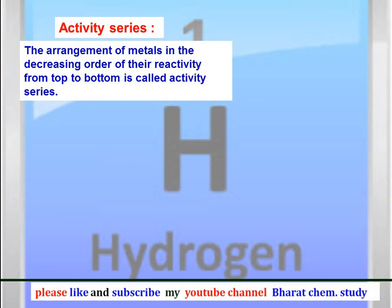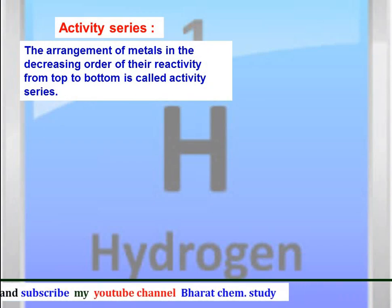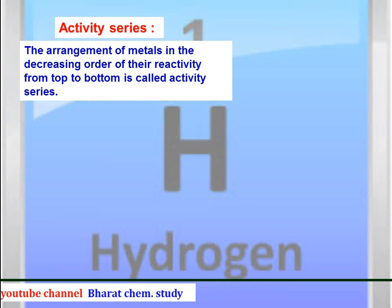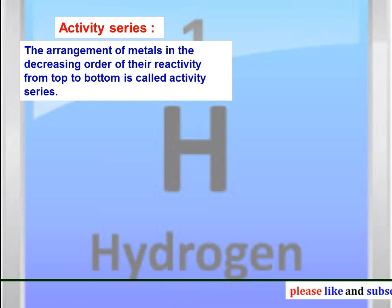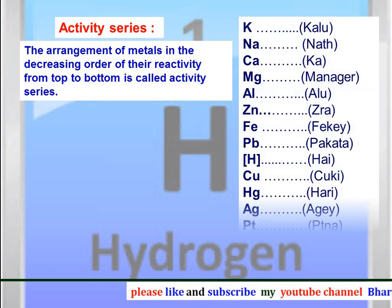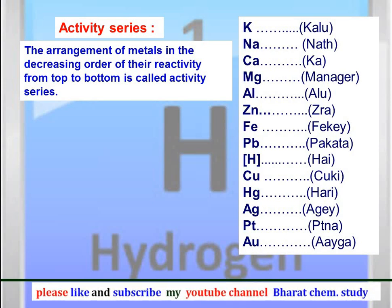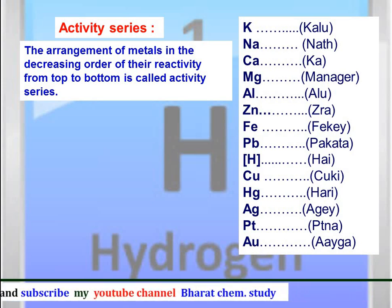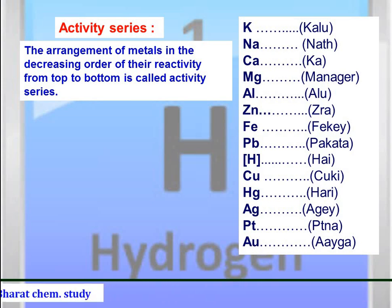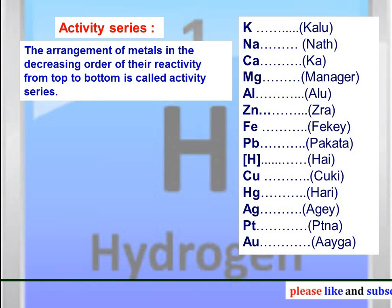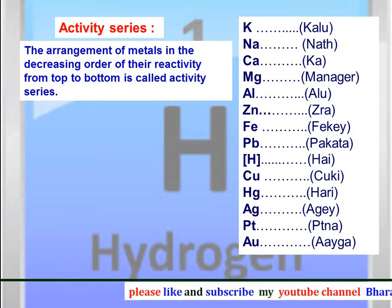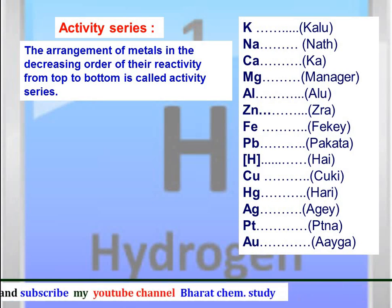The arrangement of metals in the decreasing order of reactivity from top to bottom is called the activity series. The activity series can be represented by the mnemonic: Kallum Nath ka manager Alun Zara Fikke Matata Hai Kyunki Hari Aage Patna Aayega. This we have already studied in our previous chapter on chemical reactions.